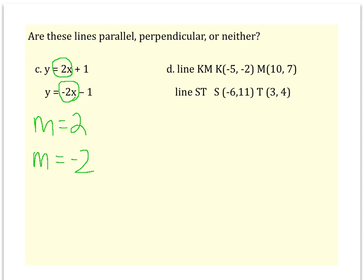Since the slopes are not the same, one is positive 2, one is negative 2, we know that they're not parallel. They're not opposite reciprocals either, so we would say the lines are neither parallel or perpendicular. They cross, but not at a 90 degree angle.